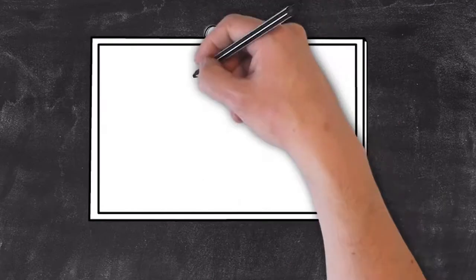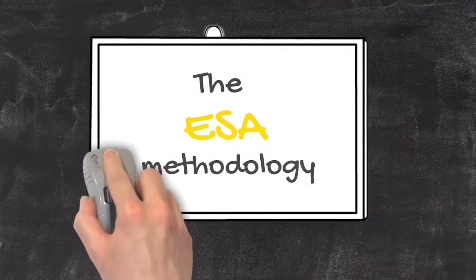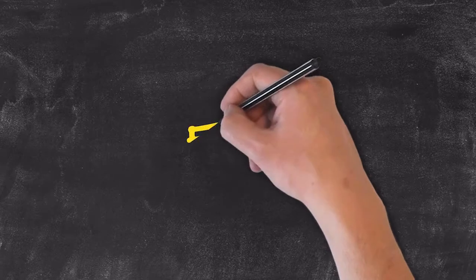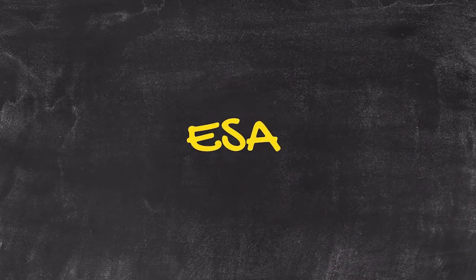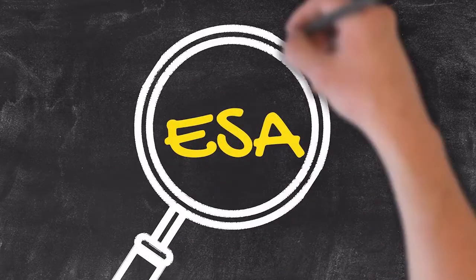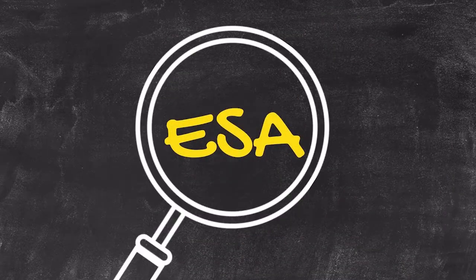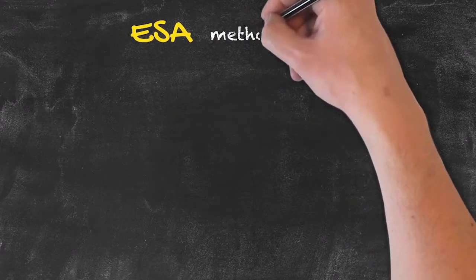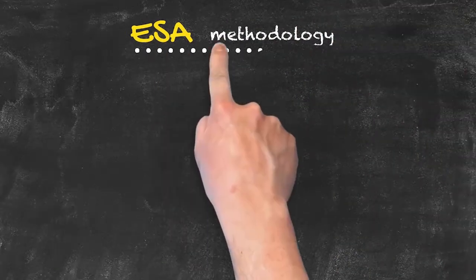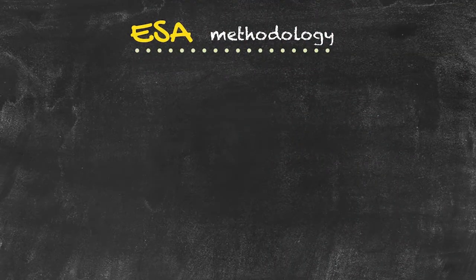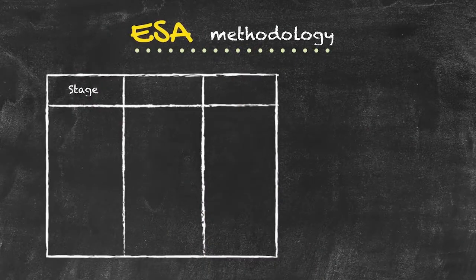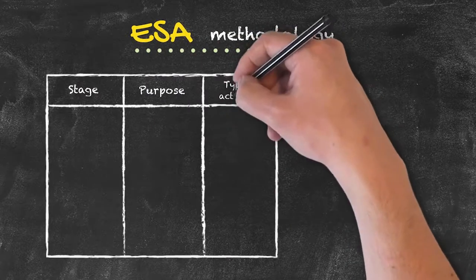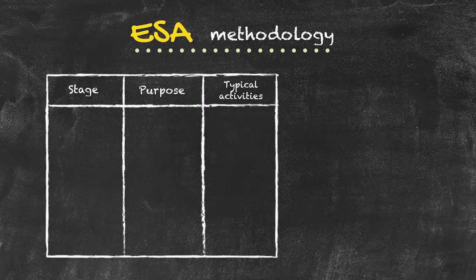This presentation is going to focus on the ESA methodology of teaching. In our teaching methodologies section, we briefly had a look at what ESA was about, but in this presentation we're going to look in greater detail about that particular methodology. This methodology is accredited to Jeremy Harmer from his Practice of English Language Teaching book. It's a three-stage methodology and we're going to look at the purpose of each stage and some typical activities that take place during those stages.